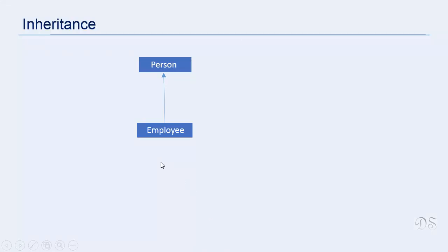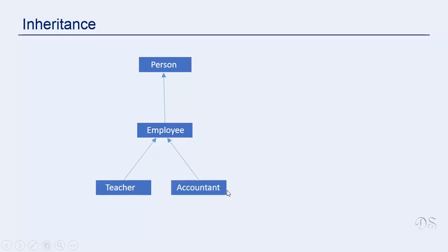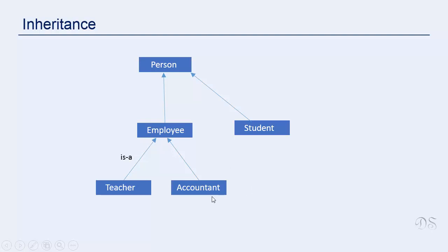You can have multi-level inheritance, which means that from the derived class you can further inherit another class. For example, from this employee class you can inherit a class called teacher and a class called accountant. So all attributes of person are available in the employee class, and all attributes of the employee class are available in the teacher class and in the accountant class. From person you can also inherit another class named student. As we have seen, there is an 'is-a' relationship between the derived classes and the base classes — teacher is an employee, accountant is an employee, employee is a person, student is a person, teacher is a person, and accountant is a person. Thus another advantage of inheritance is that you can design your system using inheritance so that it reflects the natural relationship between different components.